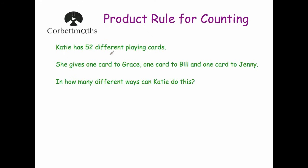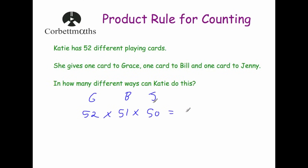Our second example: Kitty has 52 different playing cards. She gives one card to Grace, one to Bill, and one to Jenny. In how many different ways can she do this? For Grace, there are 52 options. Once a card is given to Grace, only 51 remain for Bill. After giving one to Bill, only 50 remain for Jenny. So we multiply: 52 × 51 × 50 = 132,600 different ways.